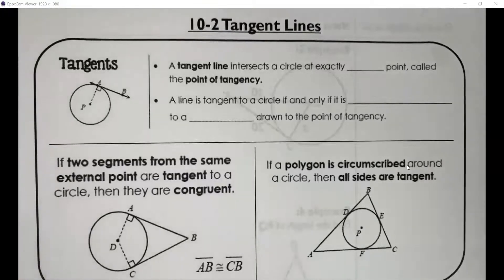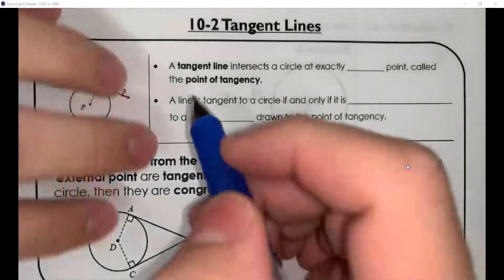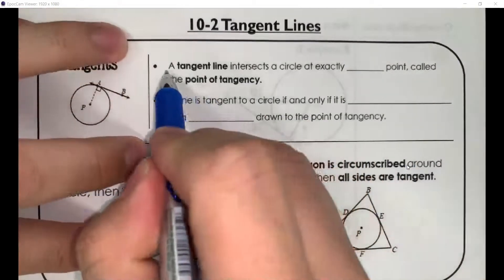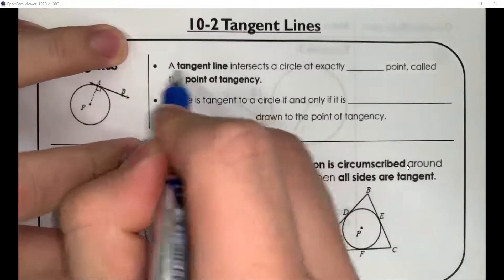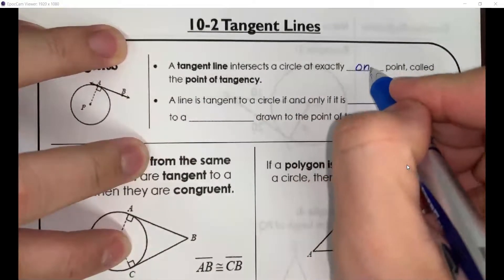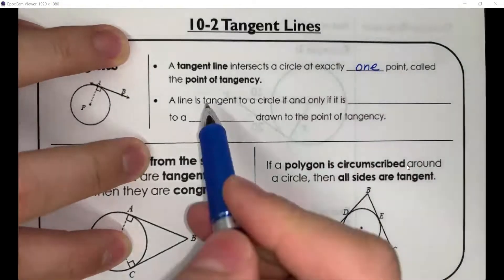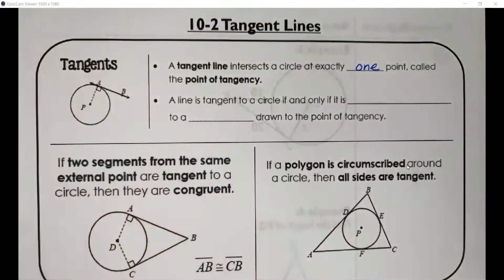Hello, everyone. We're going to go over the next section, section 10-2, which is all about tangent lines. A tangent line is essentially a line that intersects a circle at exactly one point, and we call this the point of tangency.